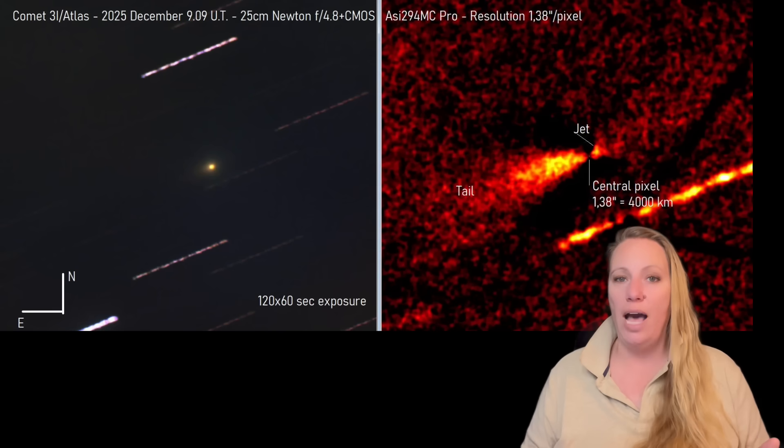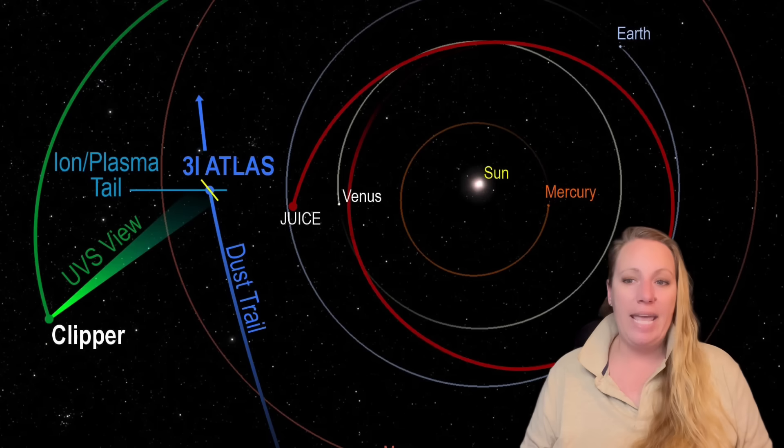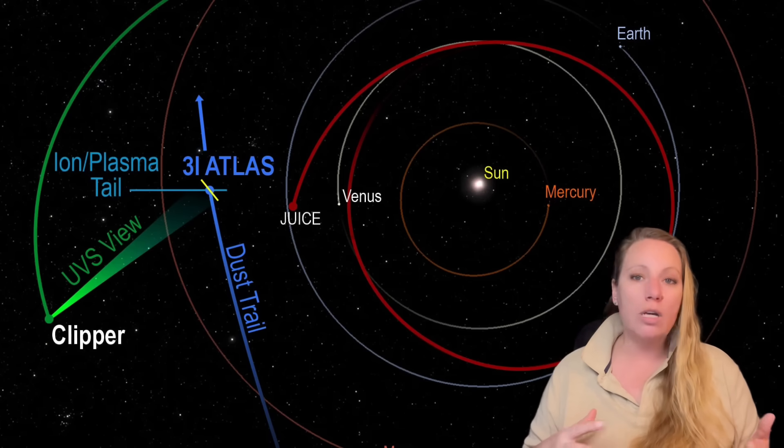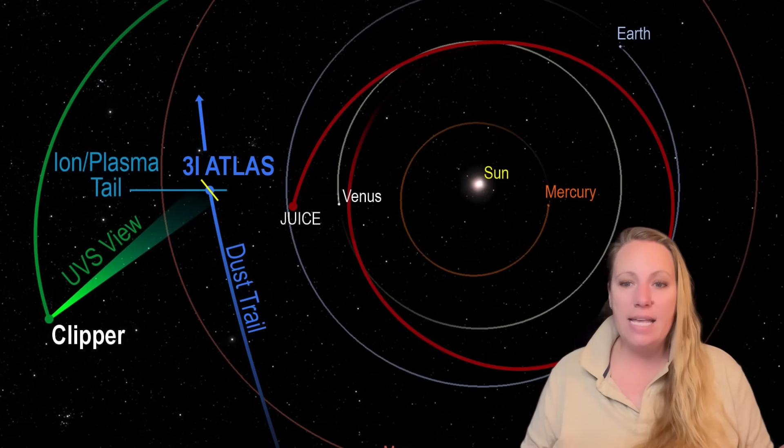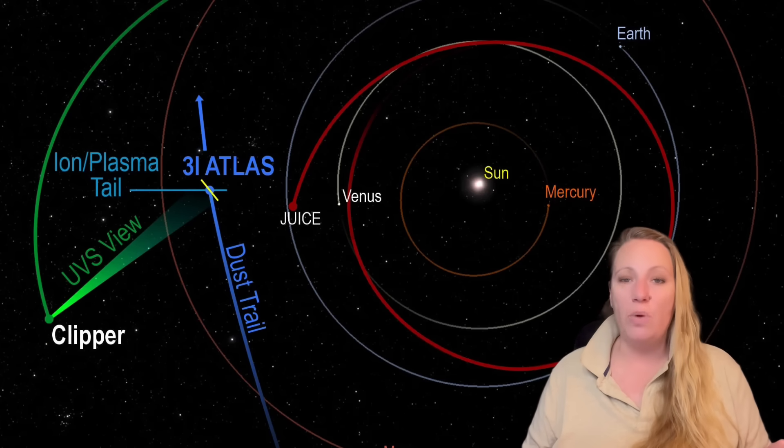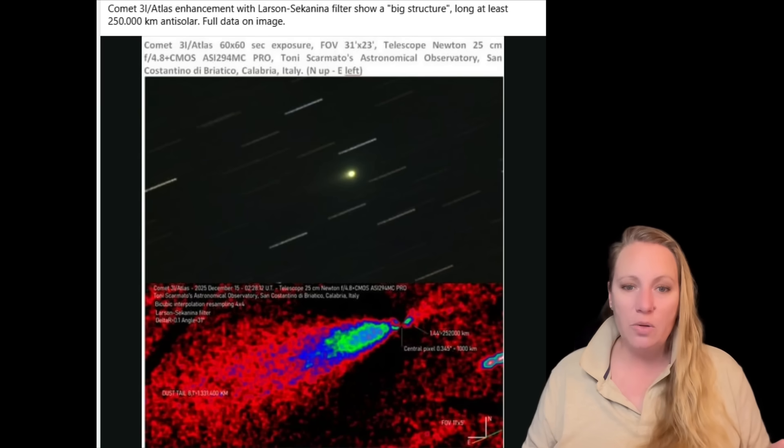And of course, this could help reveal how alien exoplanets form, for example, how common our type of solar system is, and it could maybe even help to answer the question of whether we're not alone in the universe.